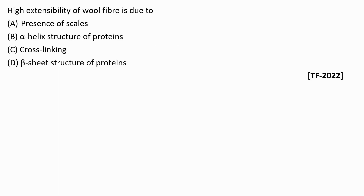Next question: high extensibility of wool fibers is due to? Option A: presence of scales, Option B: alpha helix structure of proteins, Option C: cross linking, Option D: beta structure of proteins. Extensibility means the opening of the wool fiber structure into a nearly straight chain configuration, in the form of β-keratin. This configuration is achieved due to the alpha helix structure of proteins. The right answer is Option B.